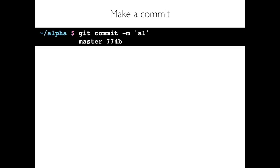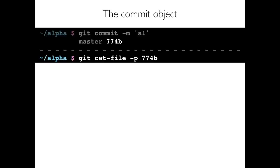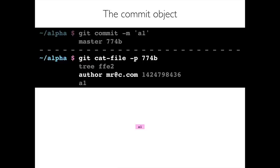Now let's make a commit. We do git commit -m with the message 'a1', representing that A is in letter.txt and 1 is in number.txt. Git says we committed to the master branch, and here's the hash of the commit object it created. Let's follow this trail using cat-file, because a bunch of objects have been created inside the objects directory as a result of this commit. Starting with the hash Git gave us back for the commit object, 774b, we cat that file and get: an author, a timestamp, a message, and then a tree entry with another hash — ffe2.